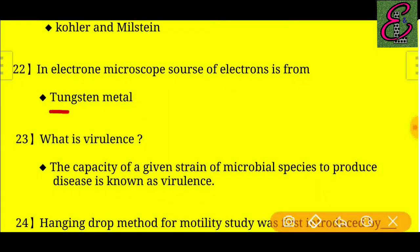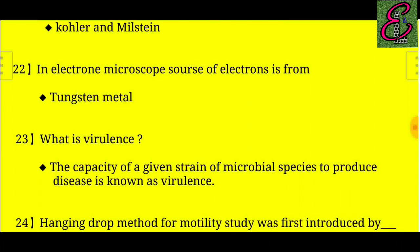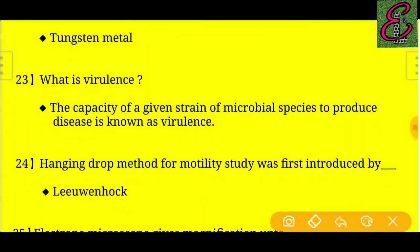Question number twenty-three: What is virulence? Answer: The capacity of a given strain of a microbial species to produce disease is known as virulence.